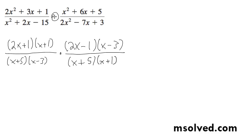Okay, so what we have here is the x plus 1s cancel out, the x minus 3s cancel out, and that's what we're left with.